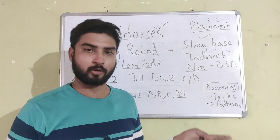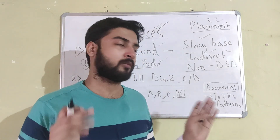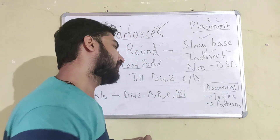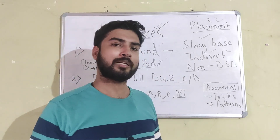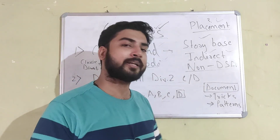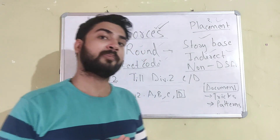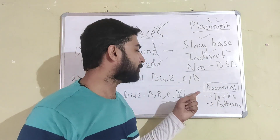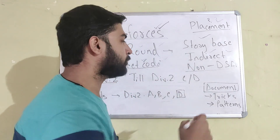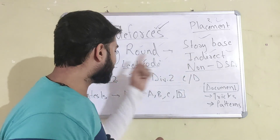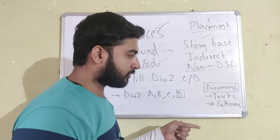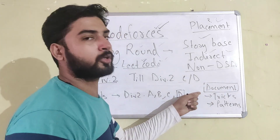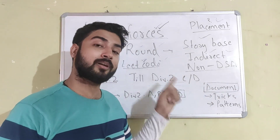In case you're not able to solve a problem, up-solve it — meaning look at the editorial and see how to solve the problem. One more important tip is to keep a document. While doing competitive programming, you'll find a lot of tricks while coding. For example, if you're using C++, you'll find tricks that make your code easier or faster. You'll be learning a lot of tricks and patterns. Whatever trick or algorithm you come across while solving problems up to Div2C or Div2D, store it in the document, and revise this document just before your coding round. Trust me, that is really going to help you.